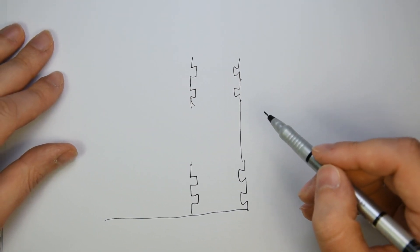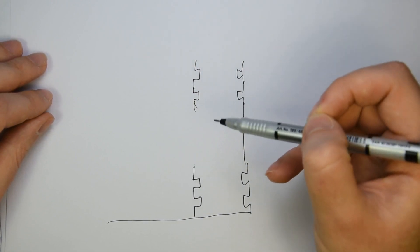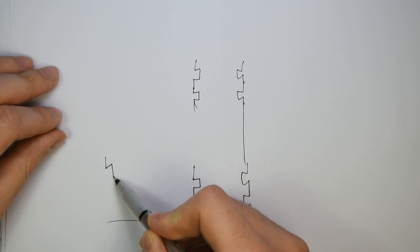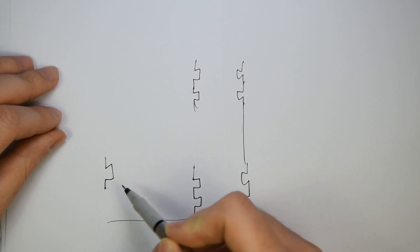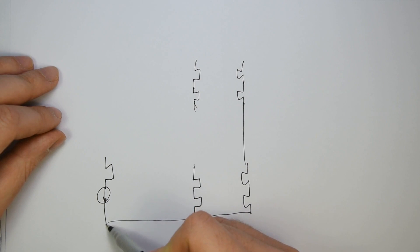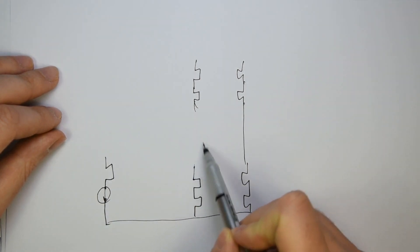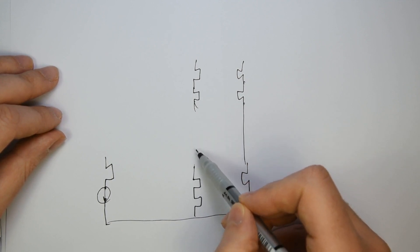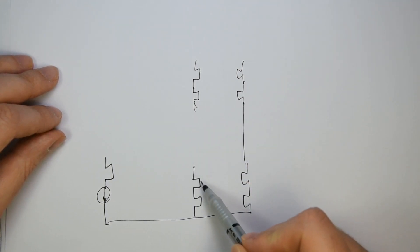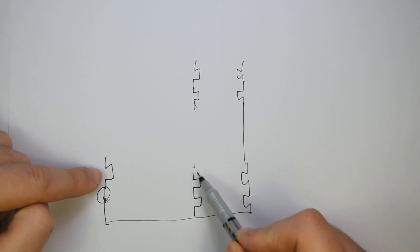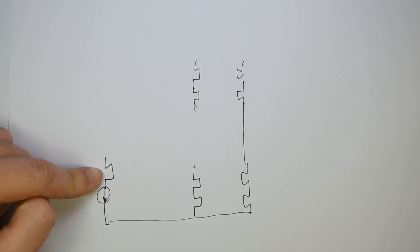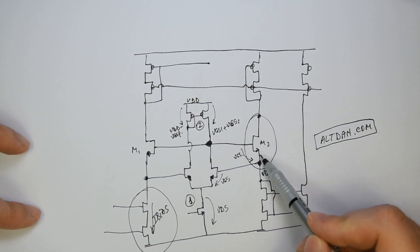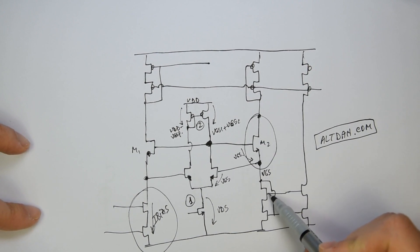Let's do the same thing, but this time implement it in a different way. We said we want to have another NMOS with a current source, and we want to mirror this current to something here. But why do we need to add another NMOS? Why not use this one? So instead of adding another transistor here like we did before, let's not add another one.